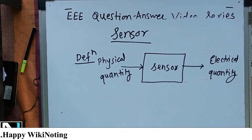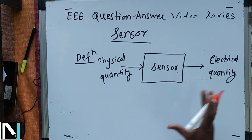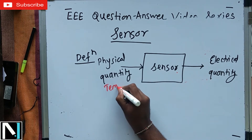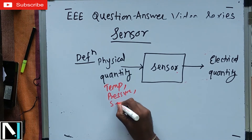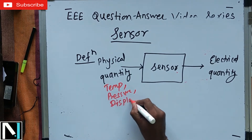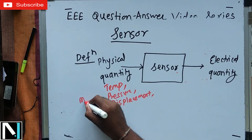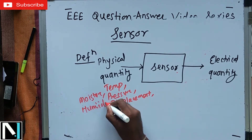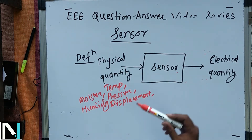There are different types of sensors such as analog sensor or digital sensor, but we don't need to go into much depth. Physical quantities such as temperature, pressure, displacement, moisture, and humidity are examples of physical quantities that sensors deal with.